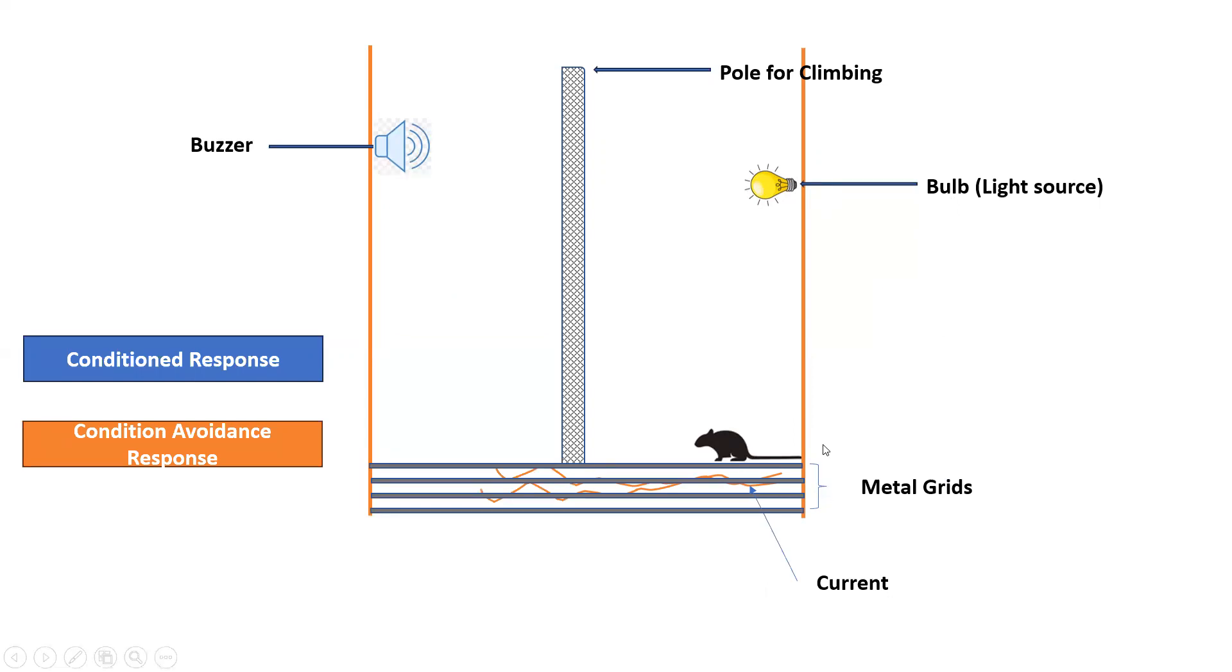So as the current is given, the animal will try to move and from here it will climb the pole. So by this way, the animal recognizes the shock and the buzzer and it is called the conditioned response. And by this way, you can train the animal.